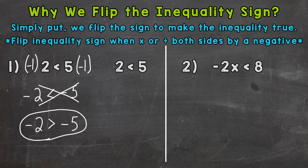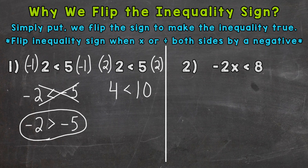Let's see what happens if we multiply both sides by a positive. So let's multiply both sides by positive two. We'll get two times two is four, which is less than five times two is ten. So when we multiplied both sides by a positive, the inequality stayed true. It's just when we multiply or divide by negatives that we need to flip that sign.